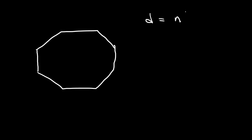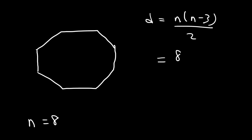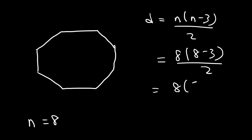Now let's try an octagon. Go ahead and use the formula to calculate the number of diagonals. The formula is n times n minus 3 divided by 2. For an octagon, n is 8, so it's 8 times 8 minus 3 divided by 2. 8 minus 3 is 5, and 8 times 5 is 40, and 40 divided by 2 is 20.